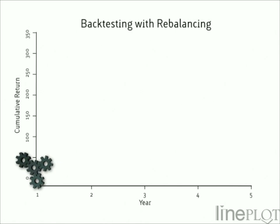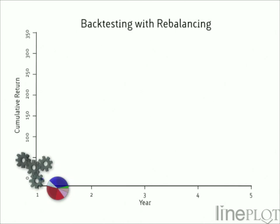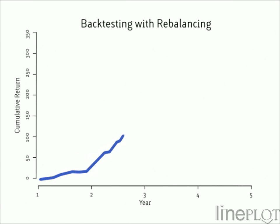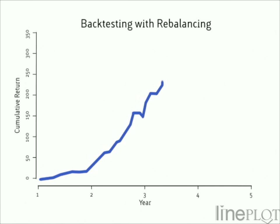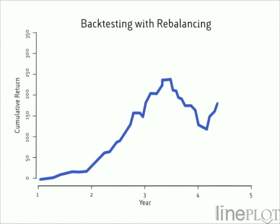Backtesting gives important insight into how a portfolio would have played out given actual history. But most backtesting systems only let the user optimise once, at the beginning, and then do periodic rebalancing to this original allocation. This is not realistic — no intelligent investor would ignore financial information as it unfolded across decades of history.